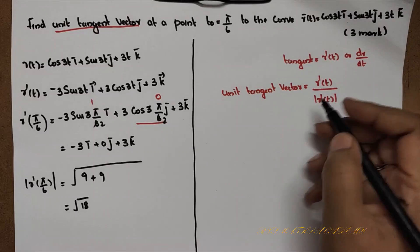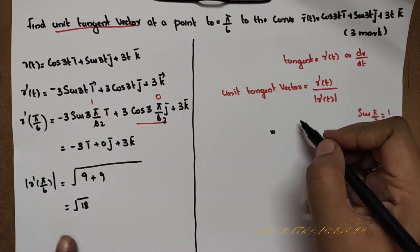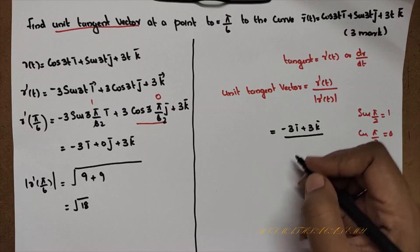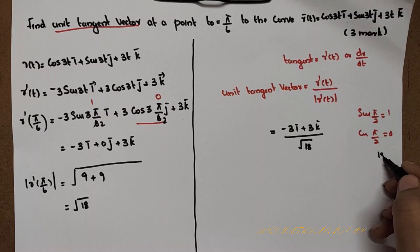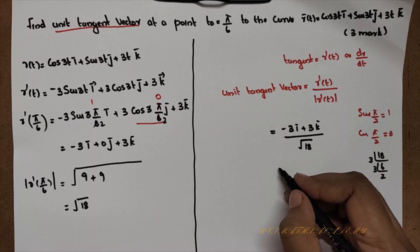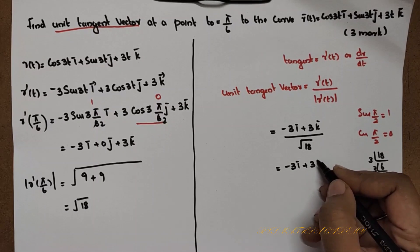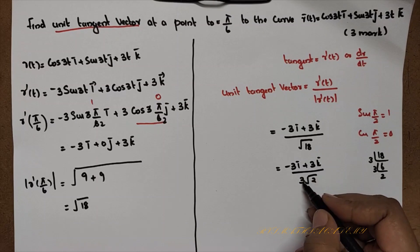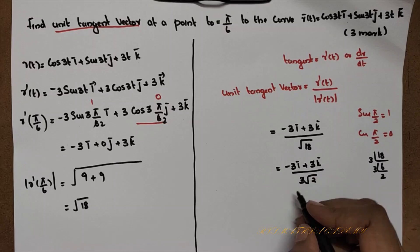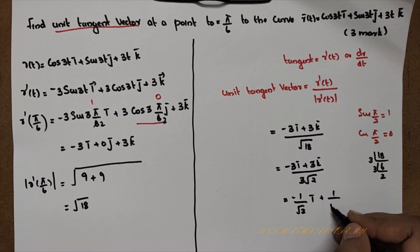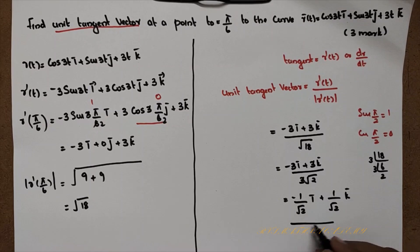Substituting into the formula: T = r'(t) divided by the modulus, which is (-3i + 3k) divided by root 18. Since root 18 equals 3 root 2, we get (-3i + 3k) divided by 3 root 2. Cancelling numerator and denominator, the final answer is minus 1/√2·i plus 1/√2·k.